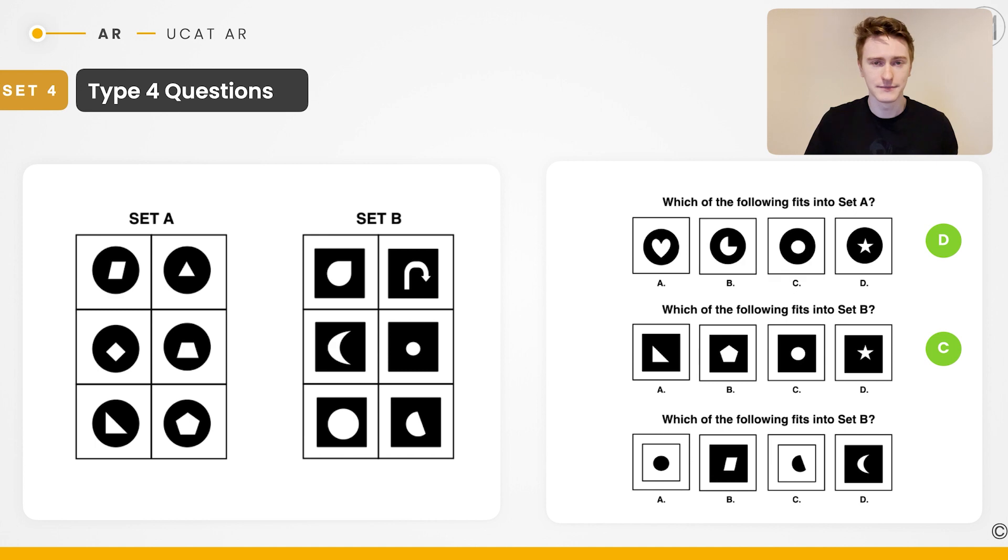And finally, the final question in this case, which of the following fits into set B? Remember that we're looking for a black square with a curved inner shape. That means that we're looking at answer D here.